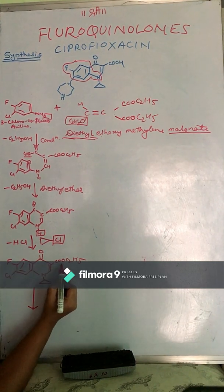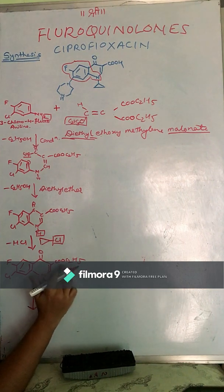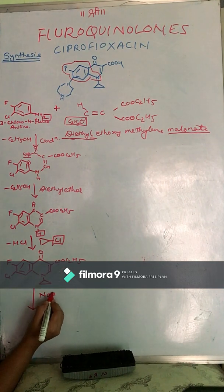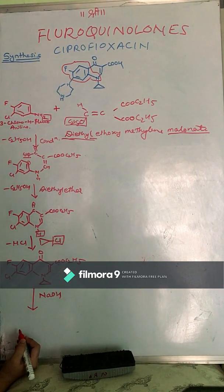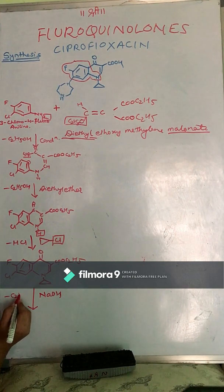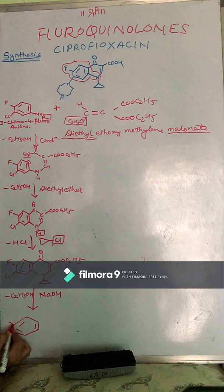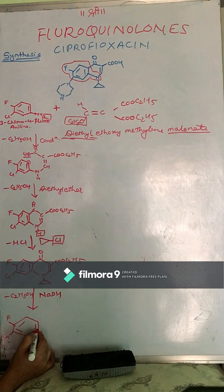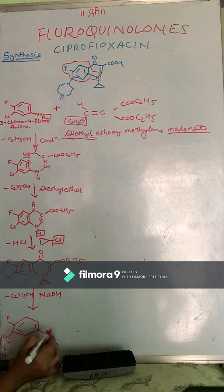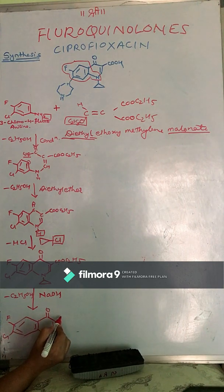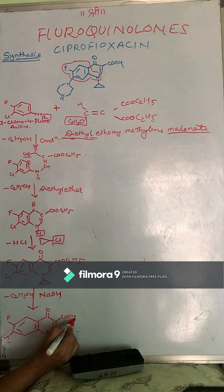In the next step, we need a carboxylic group at the third position. Since this is an ester, we can easily hydrolyze it — first with base and then with water — losing C2H5OH. We get a structure with fluoro, chloro, a cyclopropyl group, a double bond, an oxo group, and a carboxylic group at the third position.